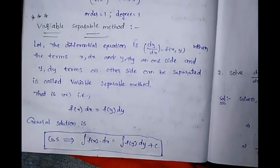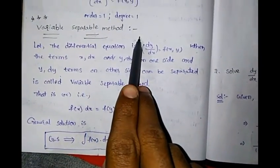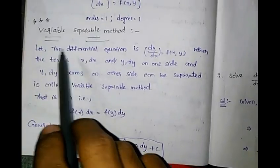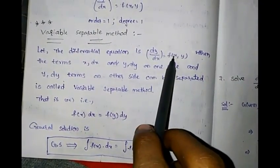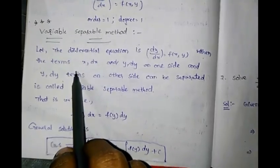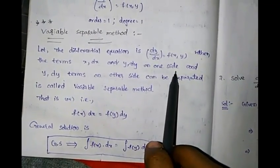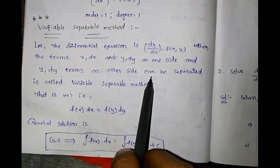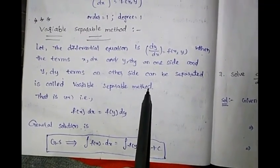We will discuss the Variable Separable Method. Let the differential equation be dy/dx = f. Then the terms in x and dx on one side, and y and dy on the other side, can be separated. This is called the Variable Separable Method.